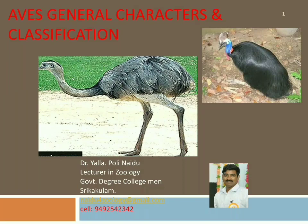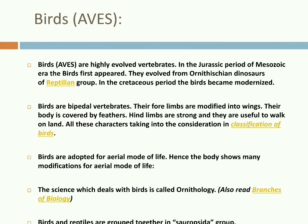Birds actually arose in the Jurassic period about 130 million years ago from reptilian ancestors. We can use Aves as an alternative word for birds. These birds are highly evolved vertebrates. In the Jurassic period of the Mesozoic era, these birds first appeared. They evolved from ornithischian dinosaurs of the reptilian group. In the Cretaceous period, birds became modernized.